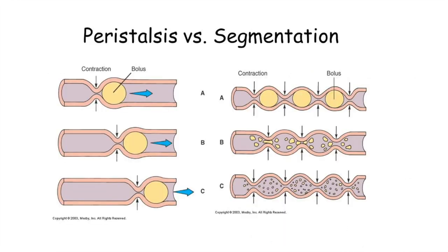As described before, the peristalsis movement occurs with a contraction before the bolus, which allows for the movement of the bolus forward. In comparison, the second part of this picture shows segmentation, which is rather for breaking apart the bolus.